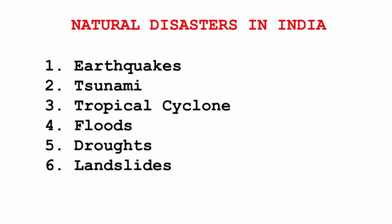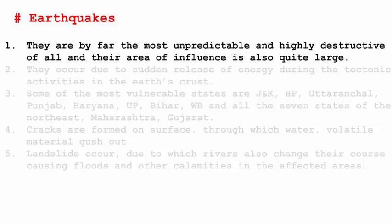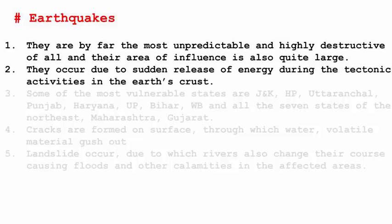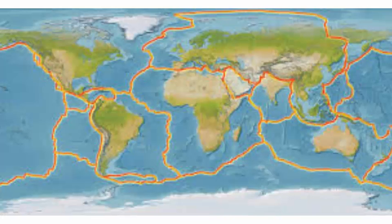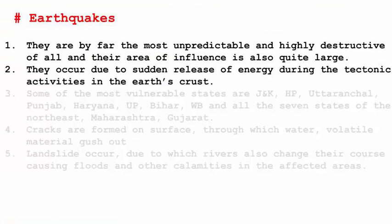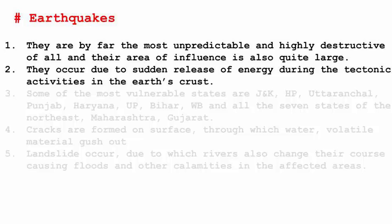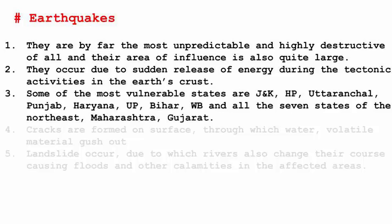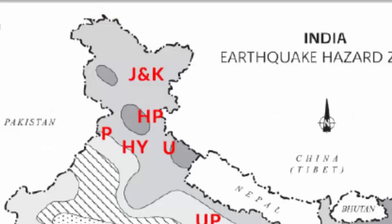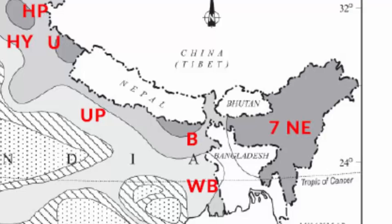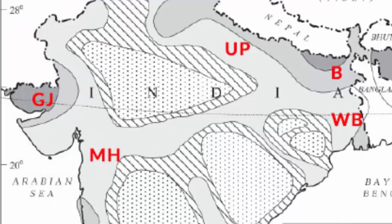Now let's understand the natural disasters that hit the subcontinent of India. The first phenomenon is earthquakes — by far the most unpredictable and highly destructive of all, with a very large area of influence. Earthquakes occur due to the sudden release of energy during tectonic activities in the earth's crust. The surface of the earth is divided into multiple tectonic plates, and the formation of different continents is a direct result of these plates moving. When two plates collide or come in contact, they release a tremendous amount of energy, hence causing an earthquake. Some of the most vulnerable states in India are Jammu and Kashmir, Himachal Pradesh, Uttaranchal, Punjab, Haryana, Uttar Pradesh, Bihar, West Bengal, all seven states of the Northeast, Maharashtra, and Gujarat.